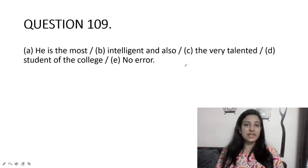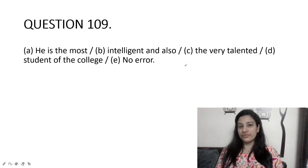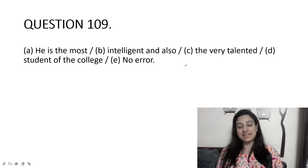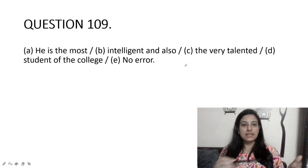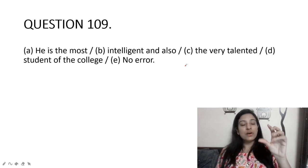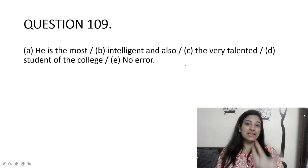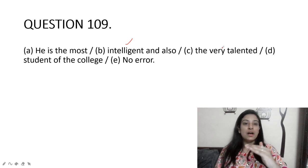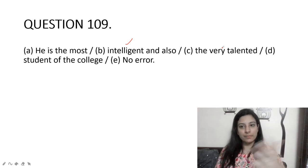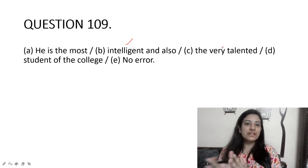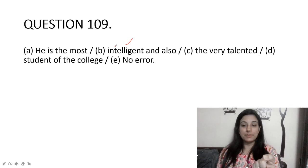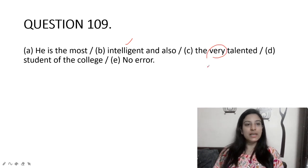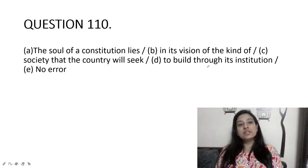He is the most intelligent and also the very talented student of the college. When you connect two adjectives with 'and,' their degrees must be the same. You said 'most intelligent' — superlative degree — so you cannot say 'very talented.' 'Very' is just an adverb intensifier. You must say 'most talented' to match the superlative degree.